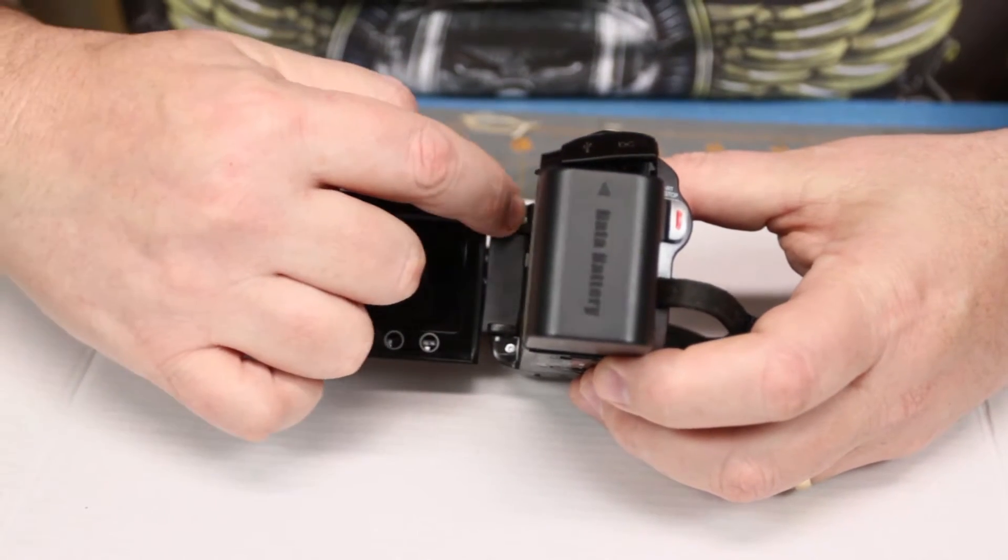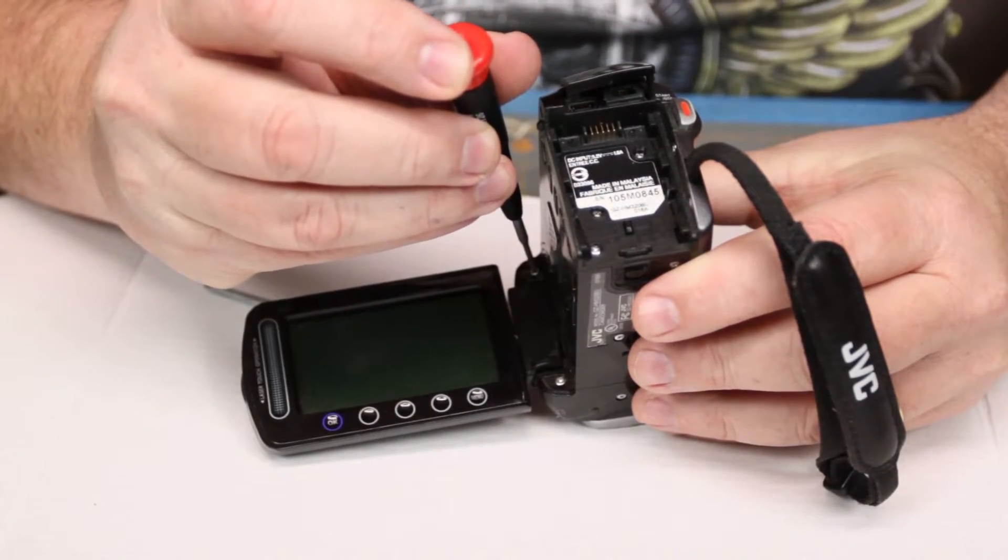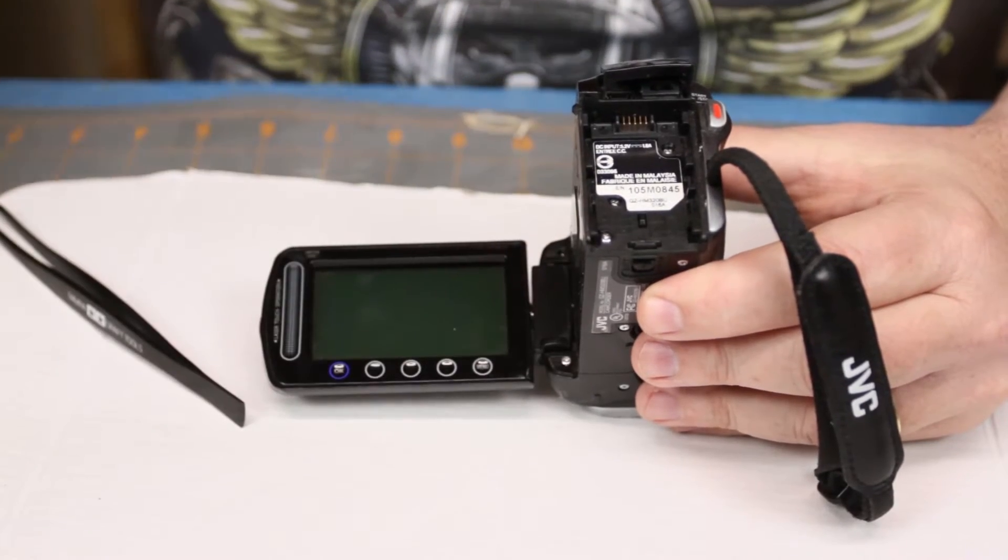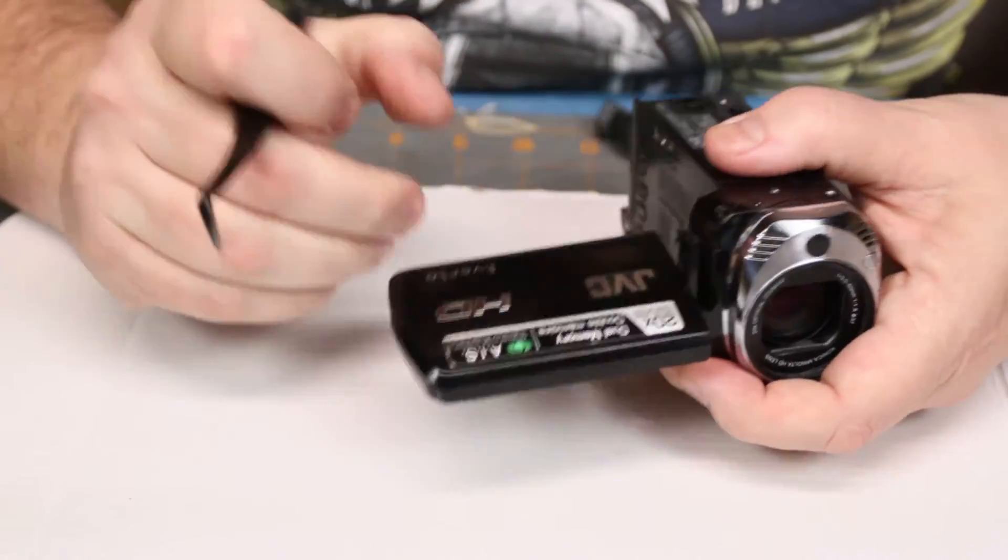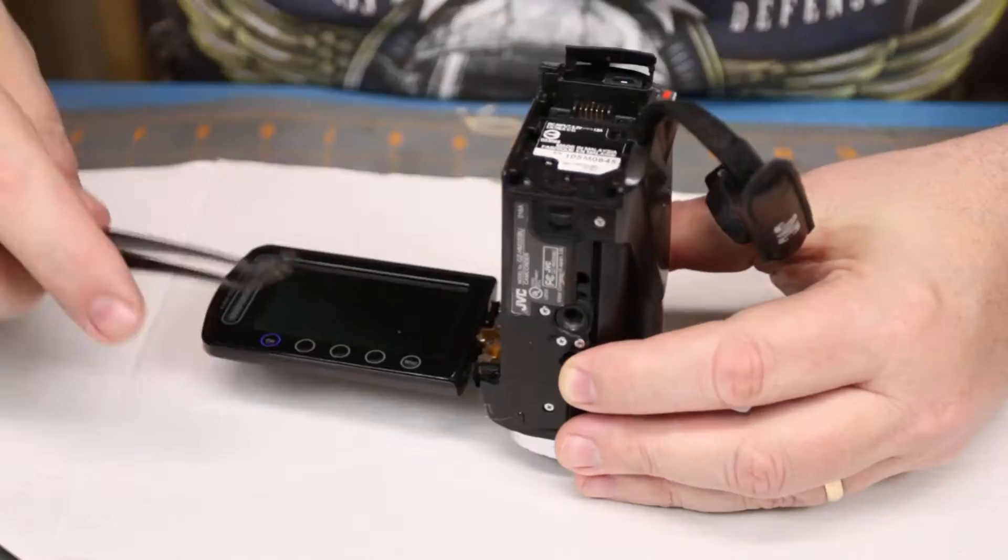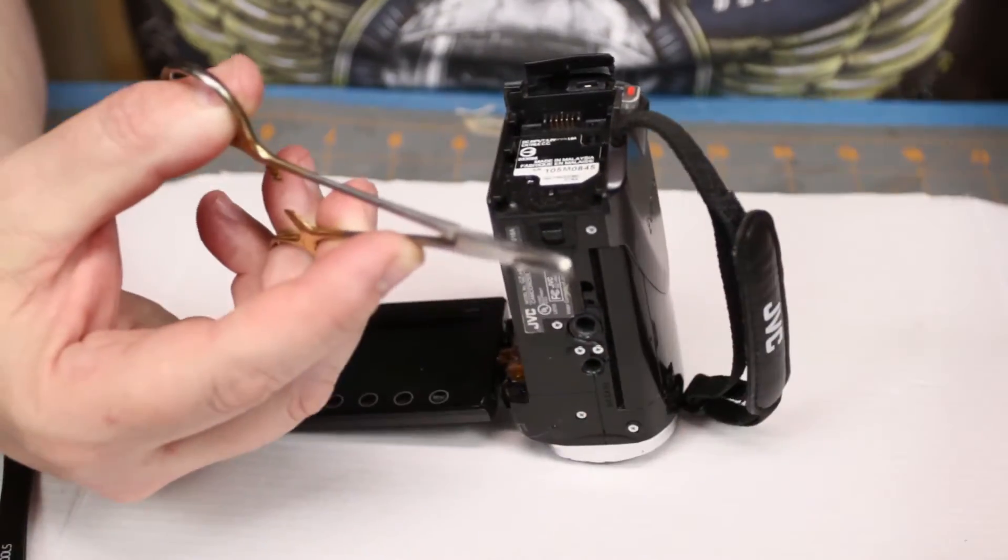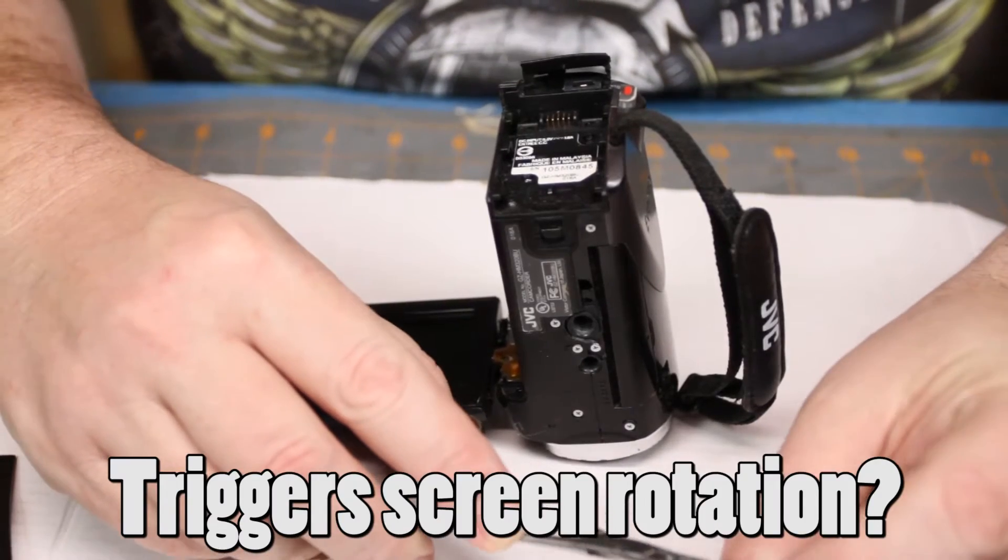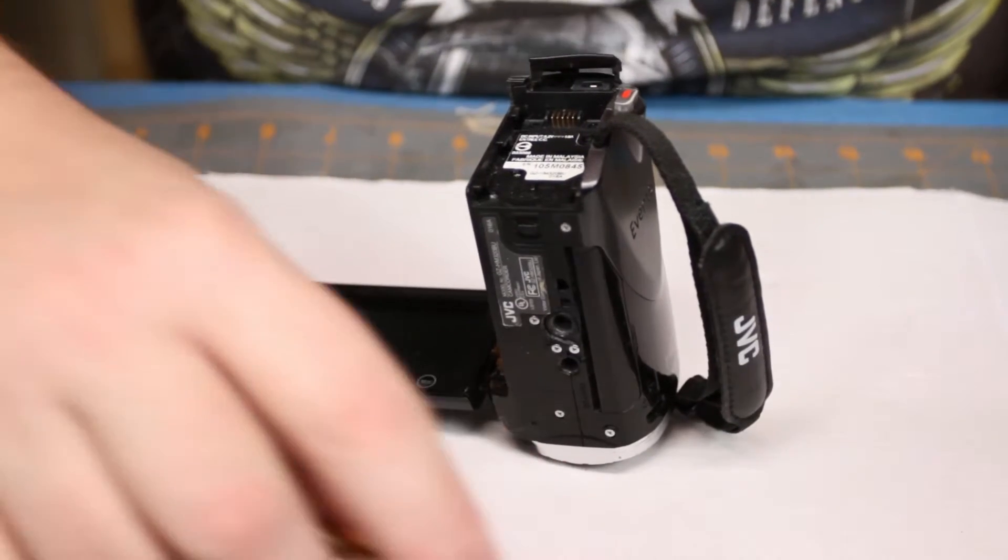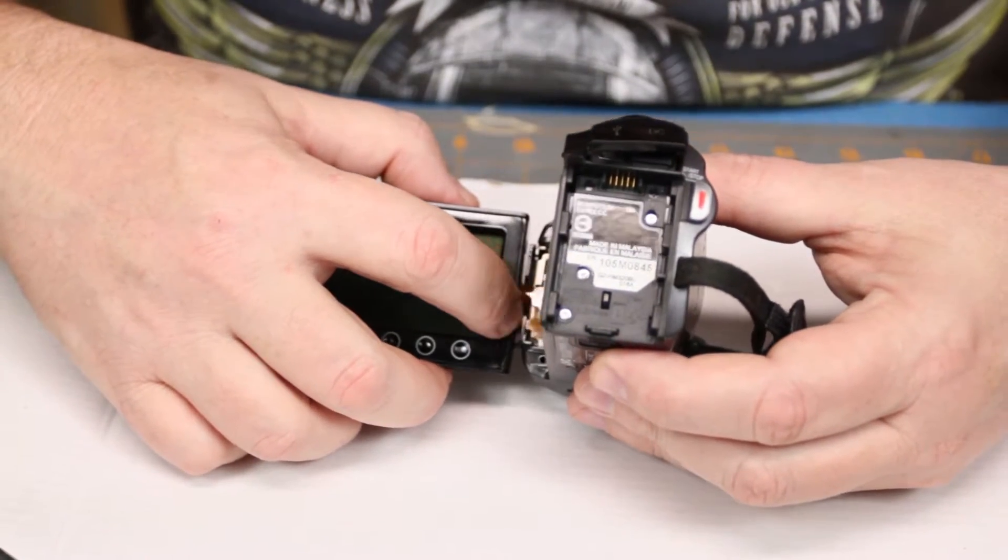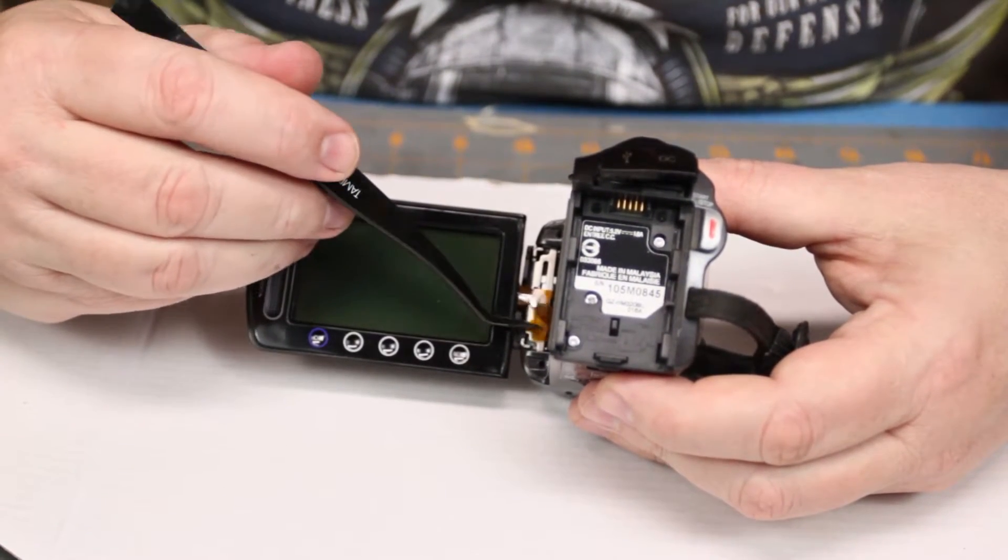First thing we need to do is I think we've got to get these two screws out. Alright, and this magnet here has come off. That is my magnet which is going to fit in this little area and that is for, I believe, a Hall effect sensor.